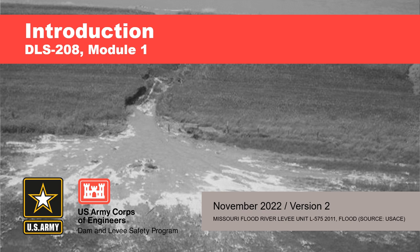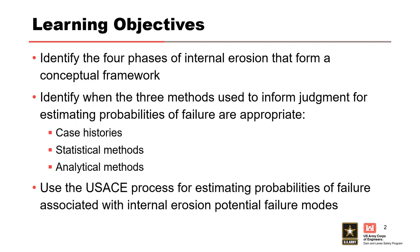This introductory presentation will provide overarching concepts and approaches to estimating internal erosion risks. The learning objectives for this module are: identify the four phases of internal erosion that form a conceptual framework; identify when the three methods used to inform judgment for estimating probabilities of failure are appropriate — these include case histories, statistical methods, and analytical methods; and use the USACE process for estimating probabilities of failure associated with internal erosion potential failure modes.